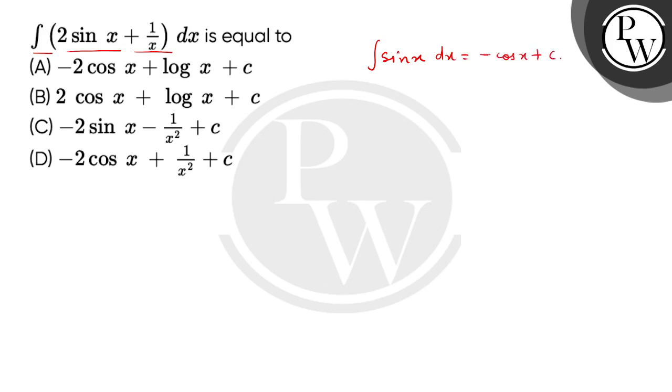minus cos x plus c1, where c1 is an integration constant. Now we have the reciprocal of x integration, which is equal to log x plus integration constant c2. Now we have the expression given.